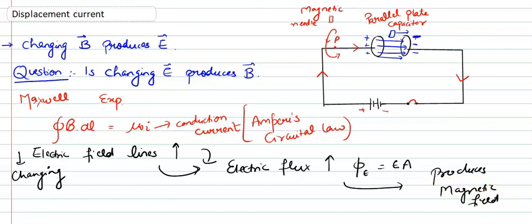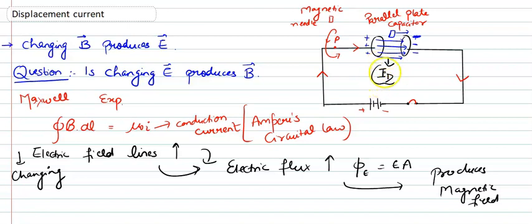Maxwell observed that the magnetic needle inside the capacitor also deflects. There is no conduction current in between the plates, yet the magnetic needle deflects — it means there must be a magnetic field. So Maxwell proved that changing electric field lines change the electric flux, and changing electric flux produces a magnetic field. If it produces a magnetic field, only then it is possible to deflect the needle. So that electric current is called displacement current.